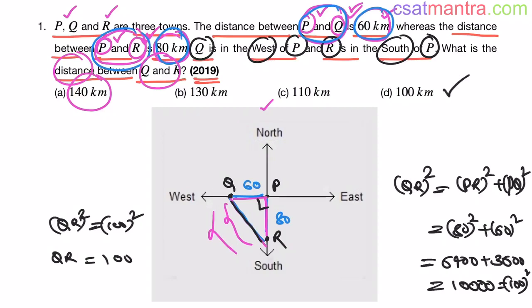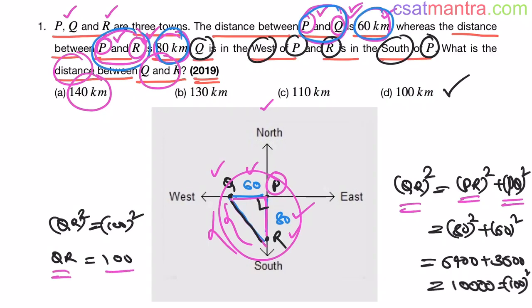Our answer is D — a very easy question. First, fix the center; thereafter from the given data fix the other points, then apply the distances. In a right-angle triangle, the hypotenuse squared equals PR² plus PQ². From this you get QR equals 100 kilometers. And remember, distance is always the shortest possible length.